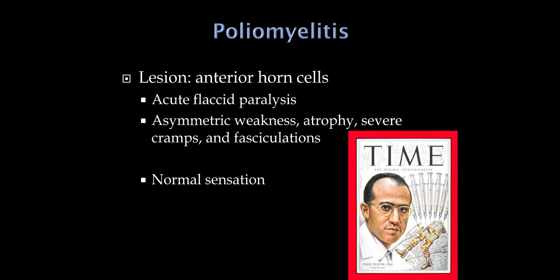Polio - we don't see many new cases today, but we still see individuals who had polio and have lived with weakness for many decades. The lesion is anterior horn cells, and since they're lower motor neurons, it's a flaccid, floppy weakness that comes on acutely. Guillain-Barré syndrome is now the most common cause of acute flaccid paralysis; it used to be polio many decades ago.